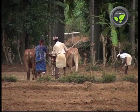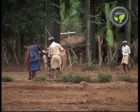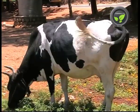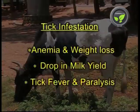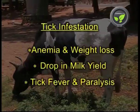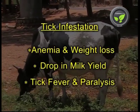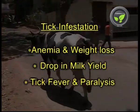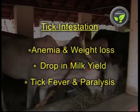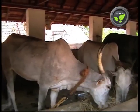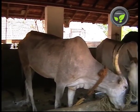Tick infestation is a common problem for all animals. These ectoparasites suck the blood, leading to anemia, weight loss, and drop in milk yield. Sometimes problems like tick fever and paralysis are seen. Severe infestation may result in the death of the animal itself due to anemia.